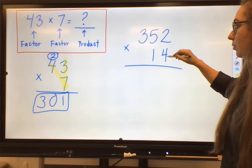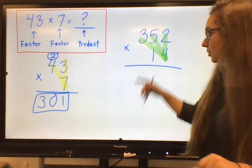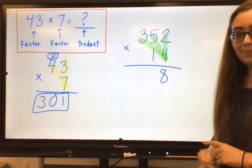Same process still applies. We are going to start with our bottom right-hand corner digit, which is that 4. We're going to multiply upwards starting at the right, then we're moving to the left. So 4 times 2, 4 times 5, 4 times 3, and then I'll tell you what we need to do when we come back around to that one.